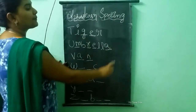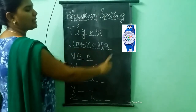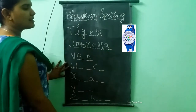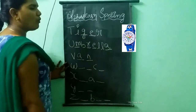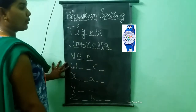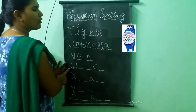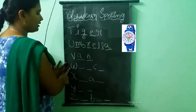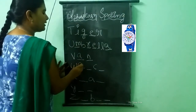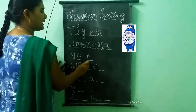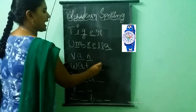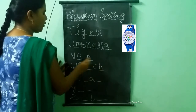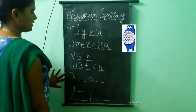What picture is this? This is a watch. What is the spelling of watch? W-A-T-C-H. Watch.